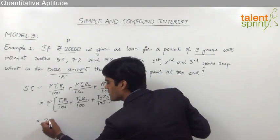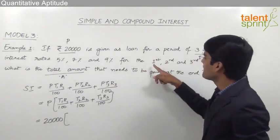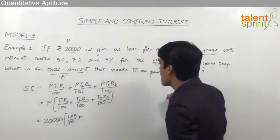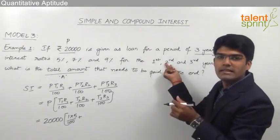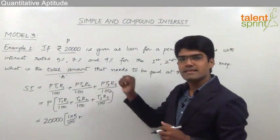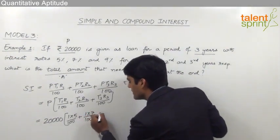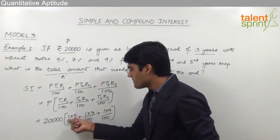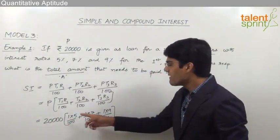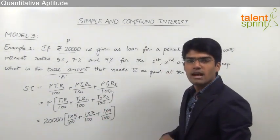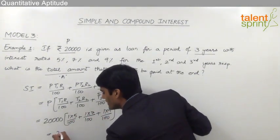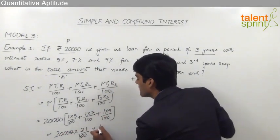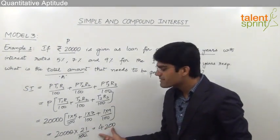The principal is 20,000. T1 is 1 year at 5%, so that is 1×5/100. For the second year, T2 is 1 year at 7%, giving 1×7/100. For the third year, T3 is 1 year at 9%, giving 1×9/100. This simplifies to 5/100 + 7/100 + 9/100 = 21/100. So SI = 20,000 × 21/100 = 200 × 21 = ₹4,200. This is the total interest.